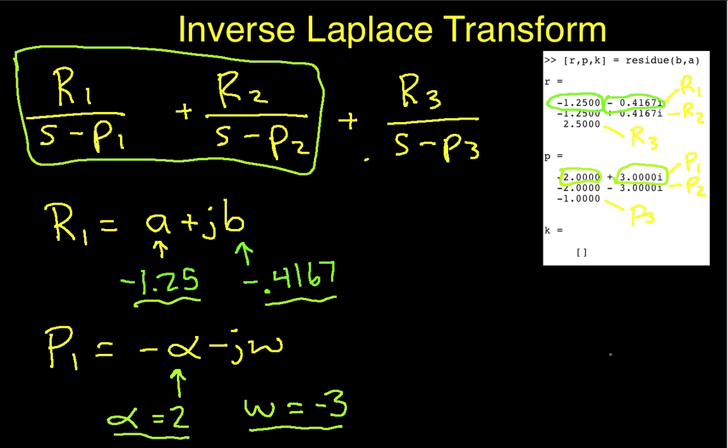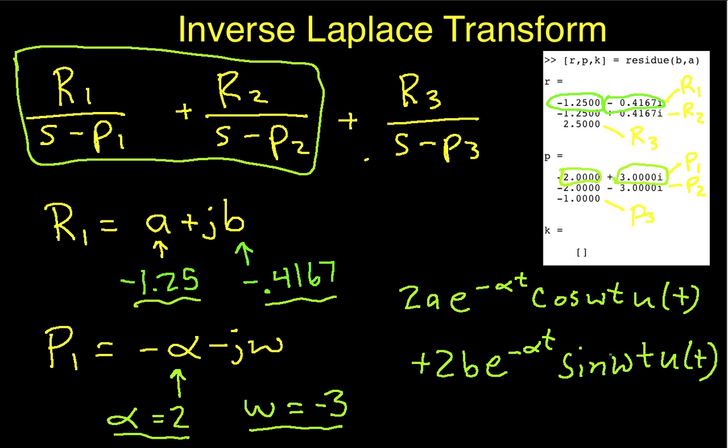So, if we do that, we'll have 2A e to the minus alpha t cosine omega t u of t. That's where we are.